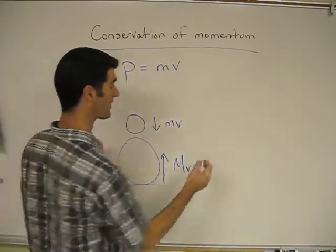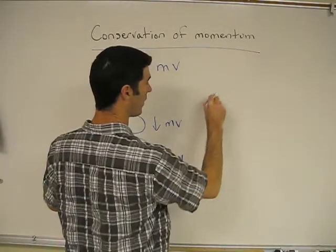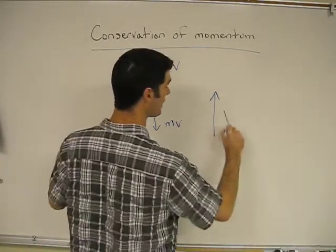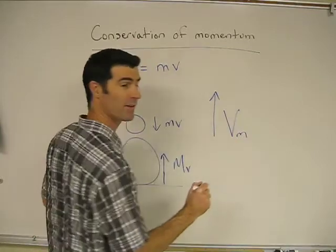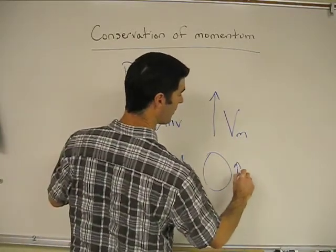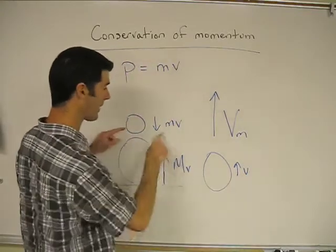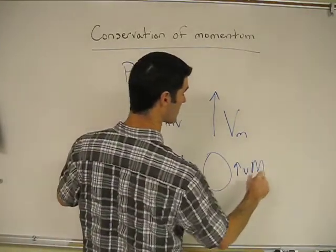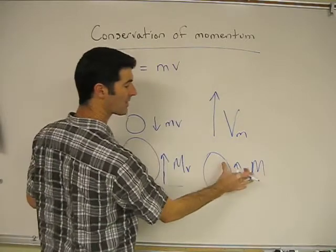So after they collide, what happens is, the little tennis ball leaves with a huge velocity for its little mass. And the volleyball, it's still going up, but its velocity was slowed greatly by the collision with the tennis ball, and it still has its big mass. So it has momentum up.